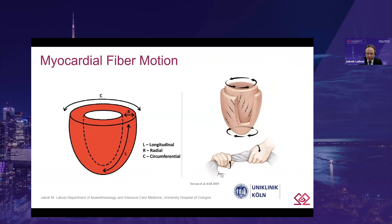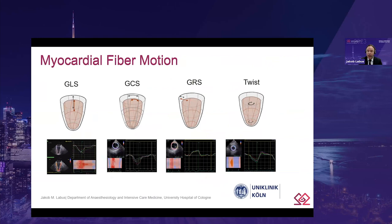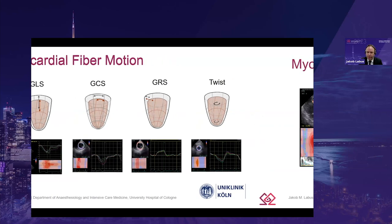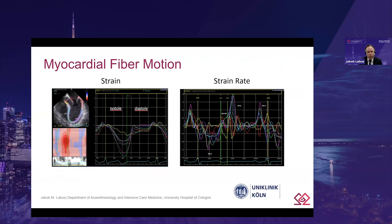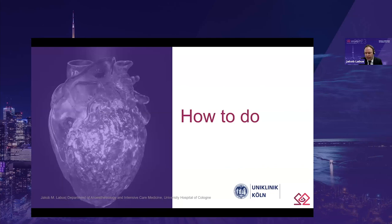For clinical purposes, left ventricle contraction can be simplified into four dimensions of motion. First, there is longitudinal shortening. Second, there is circumferential contraction during systole. Third, there is radial thickening of the myocardium. And because of the helical structure of the left ventricle, the base rotates counterclockwise while the apex rotates clockwise during systole — like wringing a towel — and this is the fourth component of contraction, the so-called left ventricle torsion or twist. All components of contraction can be evaluated by strain analysis using speckle tracking echocardiography. Moreover, while strain describes LV contraction during systole, strain and strain rate describe relaxation and filling during diastole.